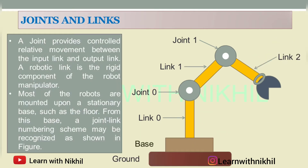Next, regarding links and joints: a joint provides controlled relative movement between the input link and the output link. As I mentioned earlier, this is the input link and this is the output link, and the joint provides control between these two. A robotic link is a rigid component of the robot manipulator. Most robots are mounted upon a stationary base such as the floor — this robot is placed or mounted on a stationary base; it is fixed and not moving.